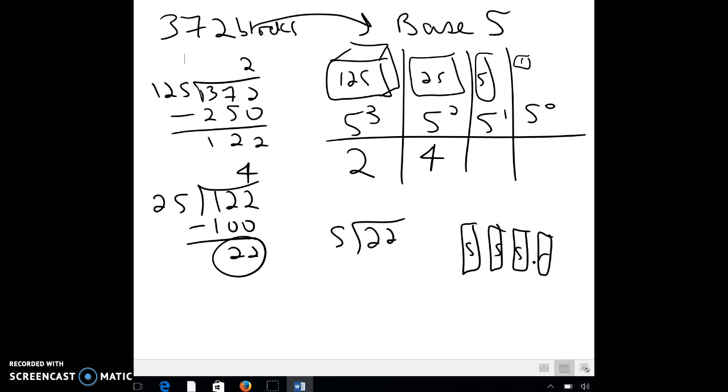Because again, remember in base 10, they group by 10. So I can make 4 of those, as you can see over here, with 2 left over, so that's 4. And then my 2 singles would just be the 2 that are left over. So this is the answer.